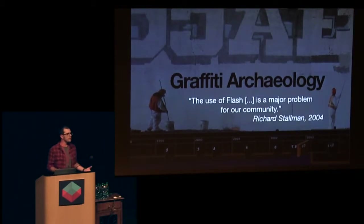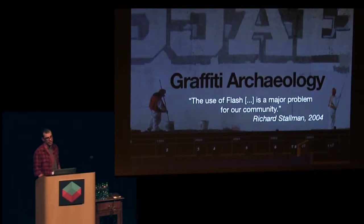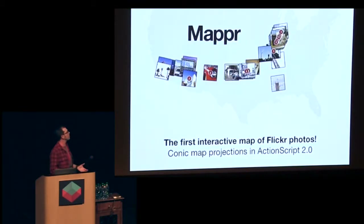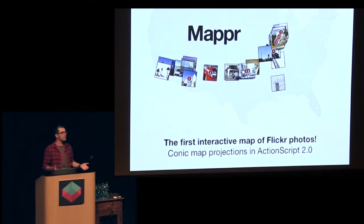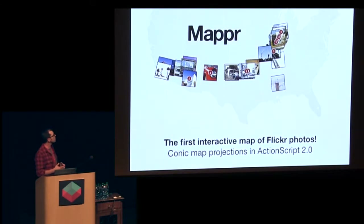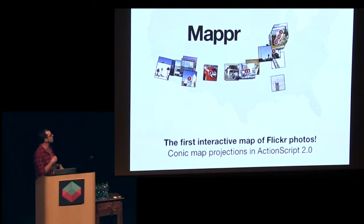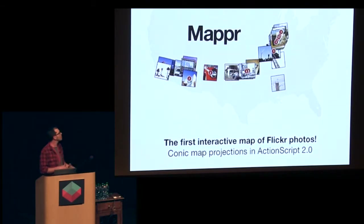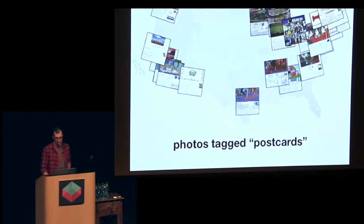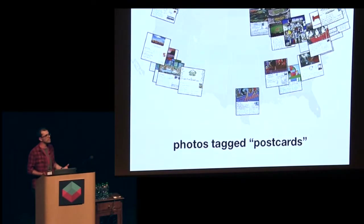A year later, Richard Stallman was saying things like the use of Flash is a major problem for our community. I felt this tension in a lot of our work. But as a creative design agency, we needed Flash as a tool. There wasn't any other way for us to make things like Mapper, which is the first interactive map of Flickr photos. These are photos tagged Route 66 — back when Flickr had no geolocation ability. People would just put tags in there, and we could sort out the photos, find tags that related to places, look them up with one of the earlier geocoders that Yahoo ran, and place them on a map to show new patterns in data.